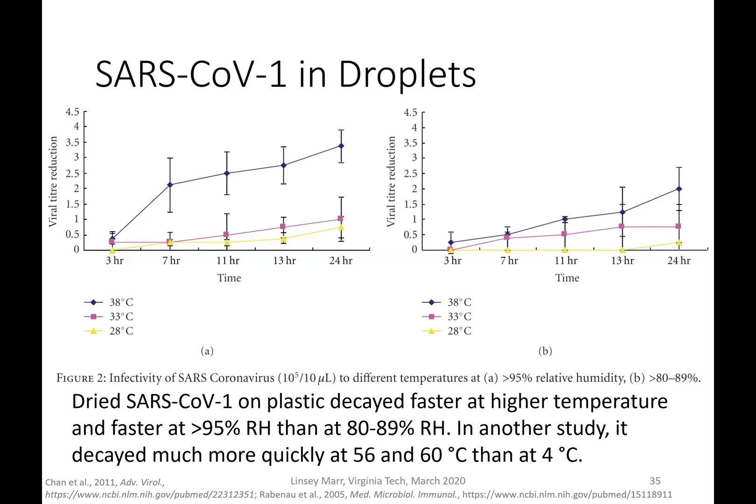To conclude: dried SARS coronavirus-1 on plastic decayed faster at higher temperatures, and faster at 95% humidity than at 80 to 89%. In another study, it decayed much more quickly at 56 to 60°C than at 4°C — not surprising, since viruses tend to be preserved well at very cold temperatures, and 56 to 60°C is extremely hot, thinking of sterilization conditions. We wouldn't see either of these extreme temperatures in a typical indoor environment.